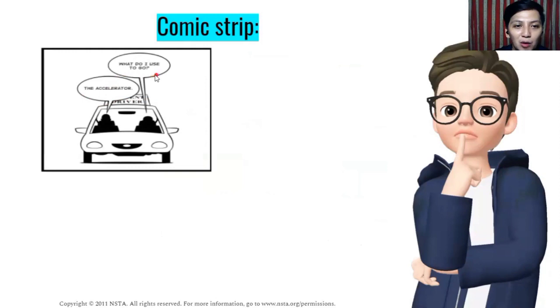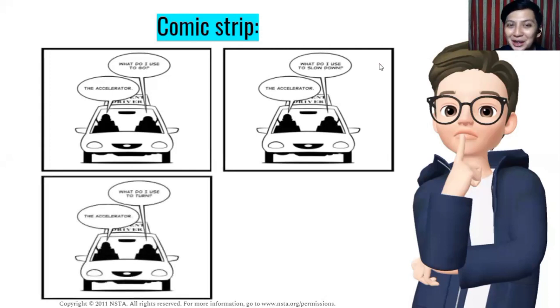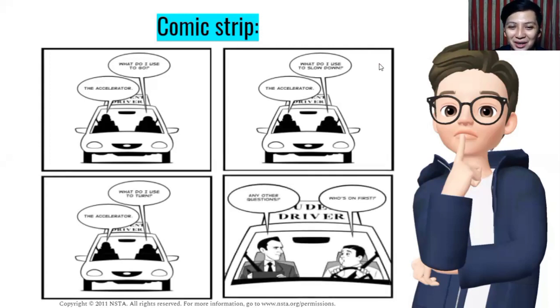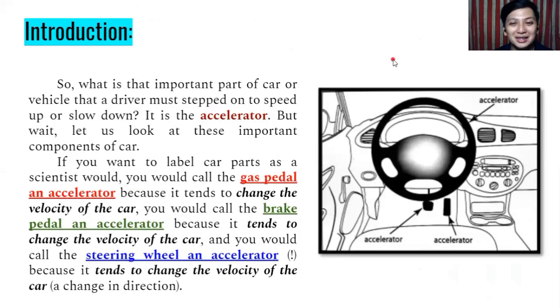Analyze the given comic strip, then find out what is the most important part of the car that allows the driver to speed up, slow down, or turn around corners. Let's have this comic strip. Scene number one: What do I use to go? The accelerator. Scene two: What do I use to slow down? The accelerator. Scene three: What do I use to turn? The accelerator. Scene four: Any other questions? Who's on first? The accelerator.